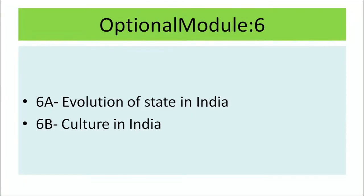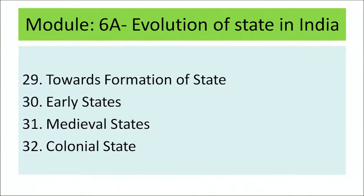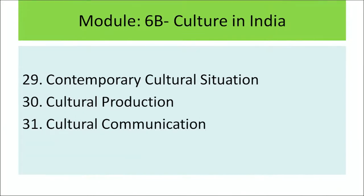The last module has 2 optional modules: Module 6A – Evolution of State in India, and Module 6B – Culture in India. These optional modules are designed to give the learner flexibility and freedom to choose a topic of their choice, and to provide a deeper understanding into specific areas of history and culture. In Module 6A, the lessons are: Lesson 29 – Towards Formation of State, Lesson 30 – Early States, Lesson 31 – Medieval States, and Lesson 32 – Colonial States. In Module 6B, the lessons are: Lesson 29 – Contemporary Culture Situation, Lesson 30 – Cultural Production, and Lesson 31 – Cultural Communication.